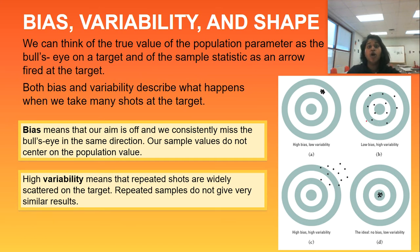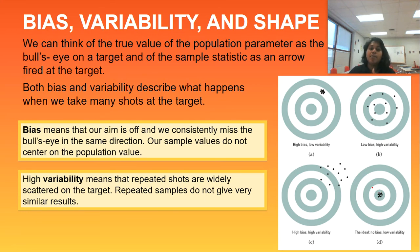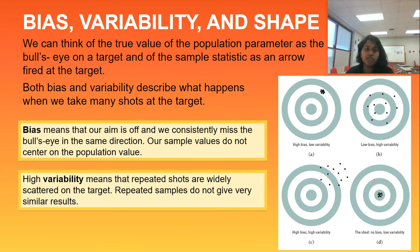High variability could be explained away by doing so many samples that you start to see the variability disappear. It could also be an error inside your experiment — it could be bias, it could be many different things. But of course, the ideal is no bias and low variability. Our sample matches our population and each sample matches itself — our repeated values give similar results. And that's bias, variability, and shape.